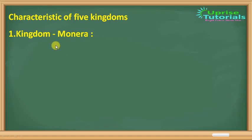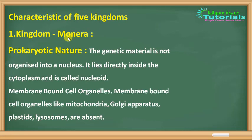Let's start with the characteristics of the five kingdoms. The first kingdom is Monera. Monera is prokaryotic in nature — prokaryotic means primitive, where development was not well advanced. The genetic material is not organized into a nucleus; it lies directly inside the cytoplasm and is called nucleoid.